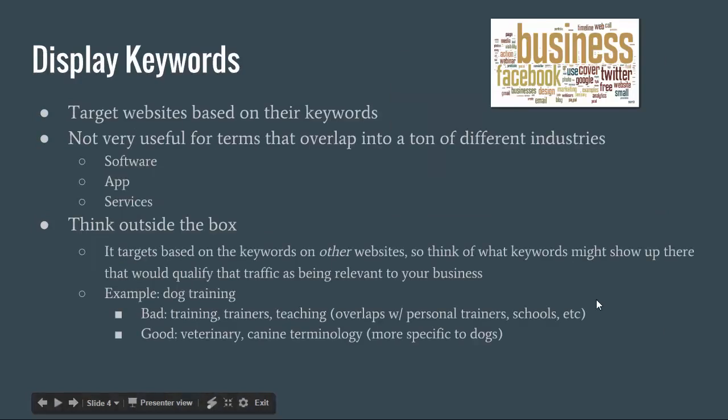Let's move on to the different types of display targeting. Starting with keywords: display keyword targeting works by targeting websites based on the keywords within the text on their websites. You can upload keywords to the display network very similarly to how you do for the search network, but instead of triggering based on what people are searching in Google or Bing, it triggers based on keywords showing up on other sites. For example, if you're bidding on a keyword like 'apparel,' your ad could show up on a Nike site — great — but also on some random forum that just happens to mention the word apparel — not so great.